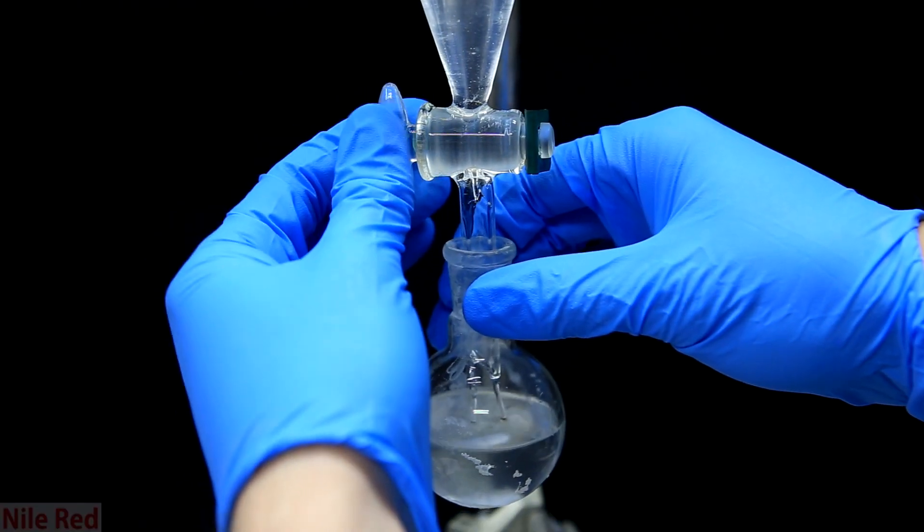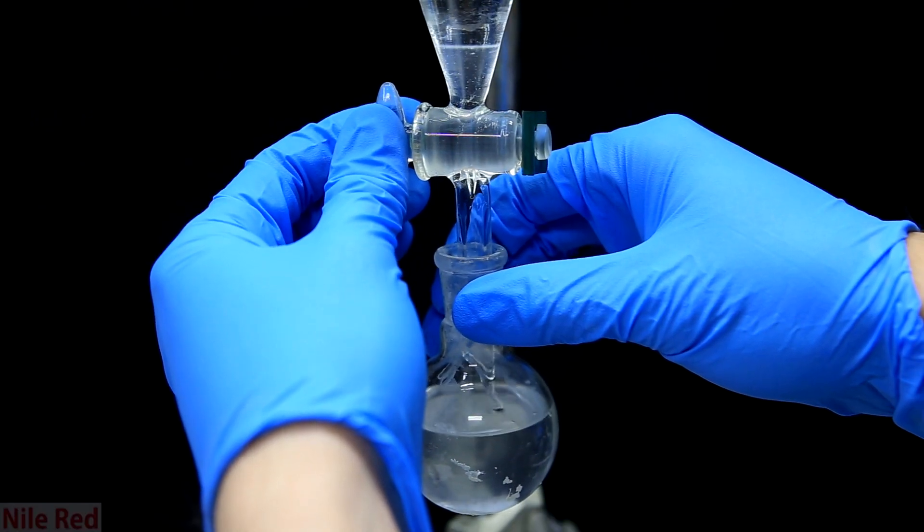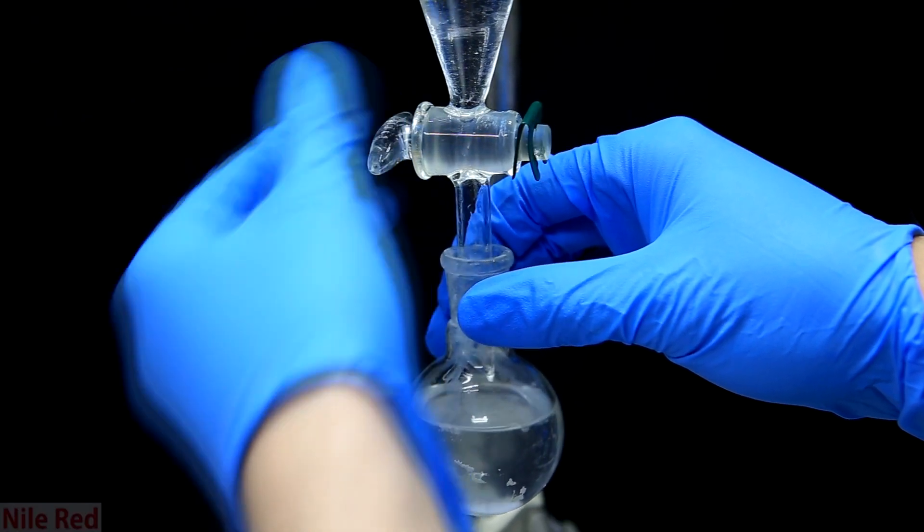So just like before we cap, shake and vent it, let the layers separate and then the waste aqueous layer is drained into a flask.